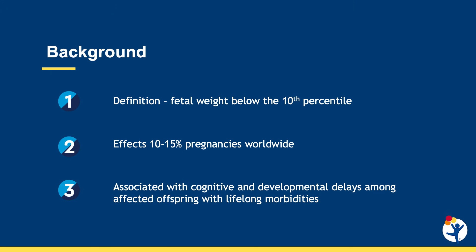I'd like to start off with telling you what fetal growth restriction is. It refers to poor in utero growth, and it's defined by a fetal weight below the 10th percentile for a given gestational age. It's important because it affects 10 to 15 percent of pregnancies worldwide and accounts for nearly 50 percent of stillbirths. Offspring may suffer from neurodevelopmental, immunological, and multi-organ sequelae.